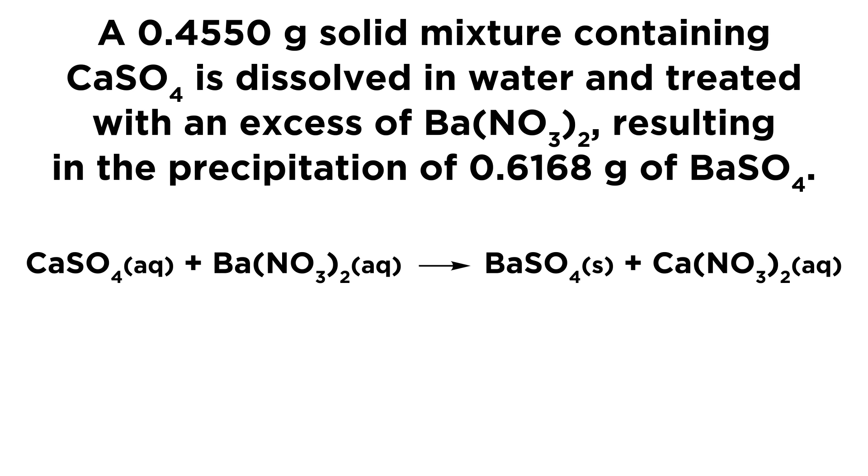So let's look at the equation that is associated with this. We've got some calcium sulfate, and remember we are treating this with an excess of barium nitrate, and then that is going to generate a barium sulfate precipitation, and then calcium nitrate, that's just going to be spectator ions.